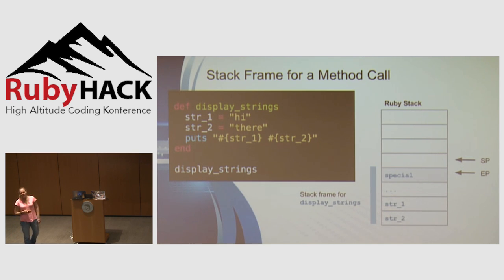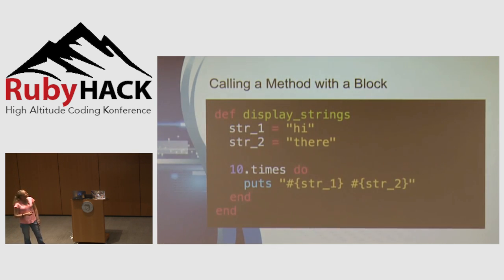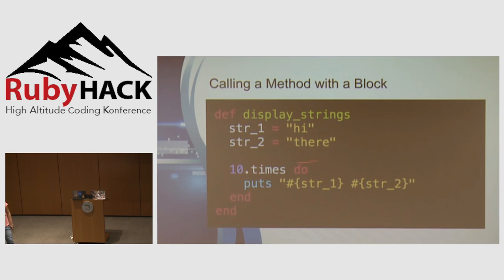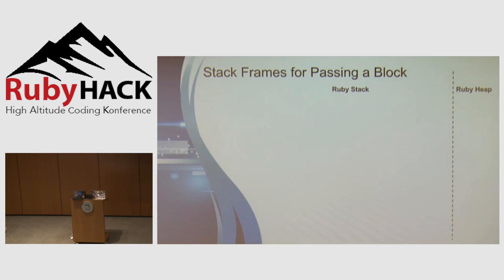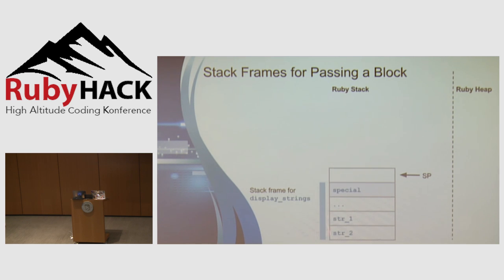Now let's look at what happens on the stack when we call a method with a block. I've modified display_strings to have a call to times inside it, which takes a block using the two local variables. Here's the stack as we had it while display_strings was executing — local variables popped, special slot set, stack pointer and Ruby's environment pointer set. Now Ruby gets to the point where the times method needs to run, so a new stack frame gets created for that method call.